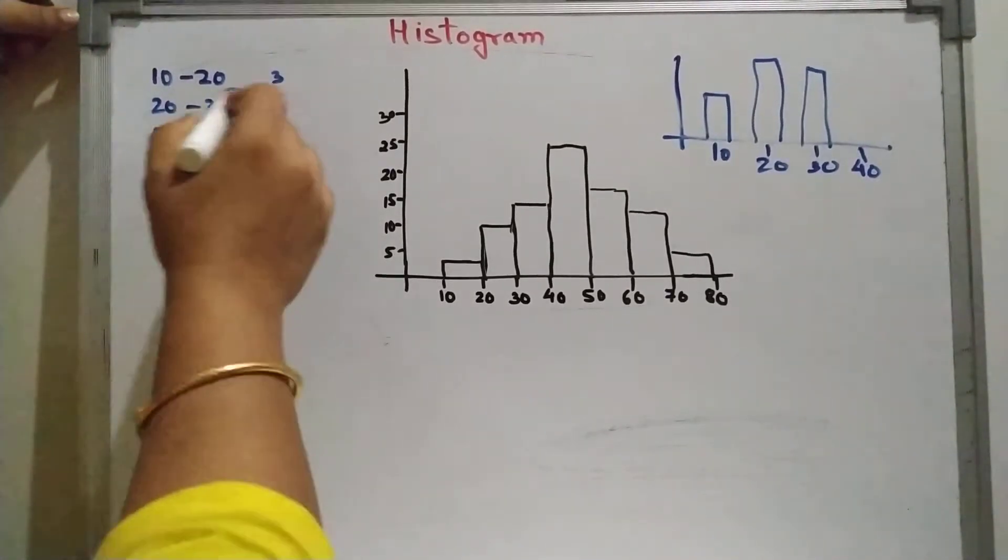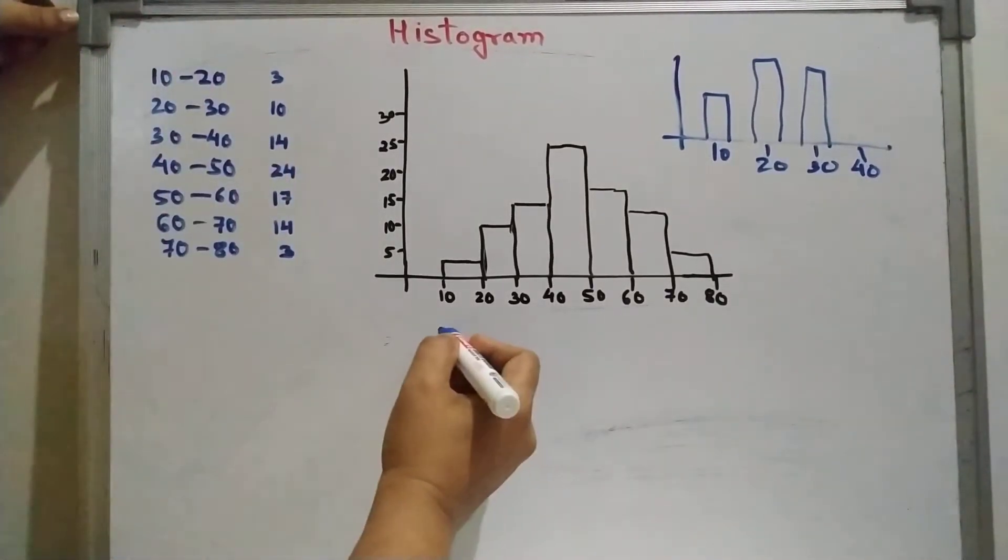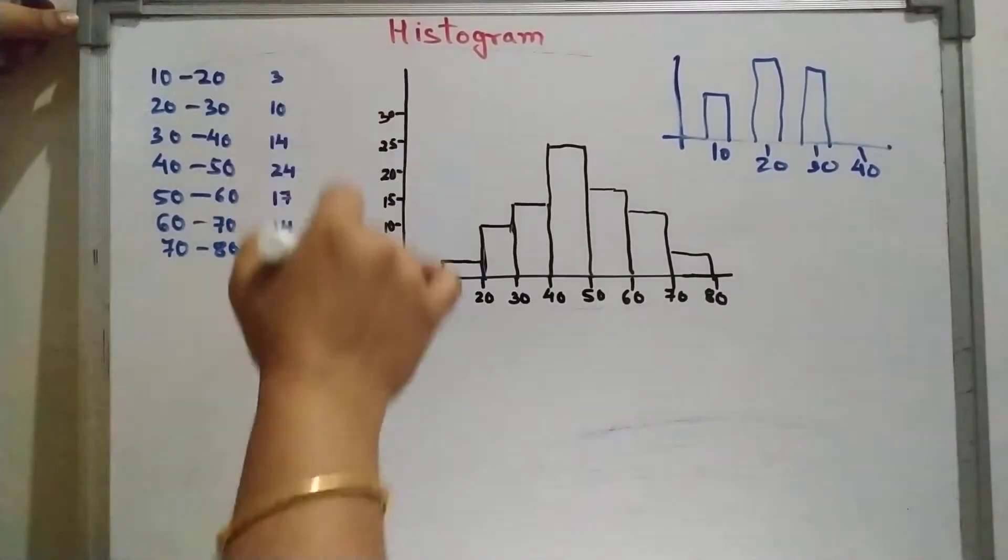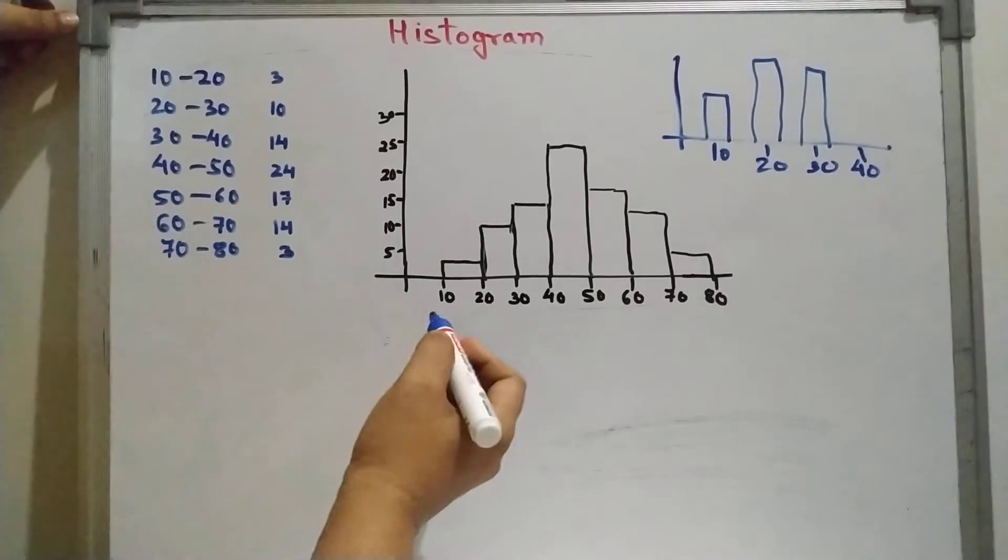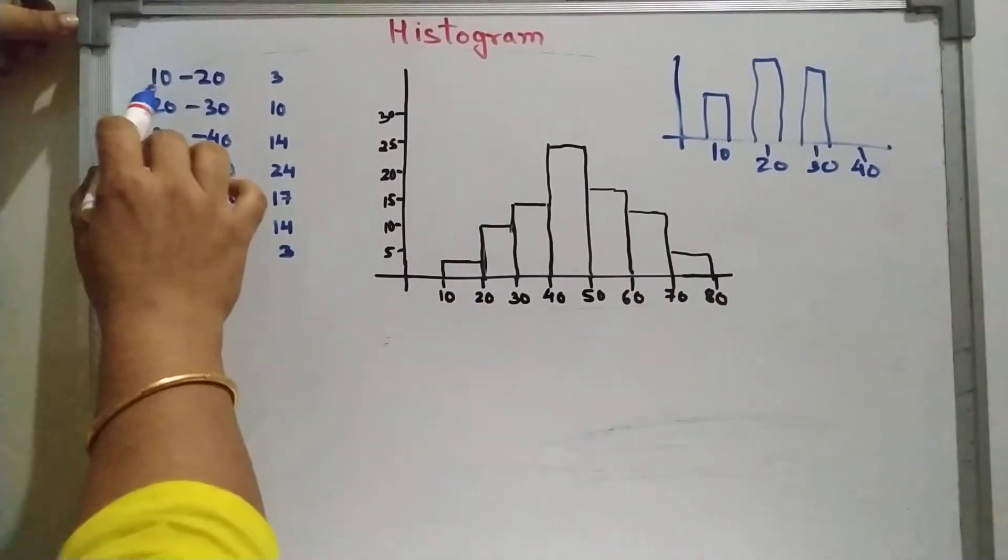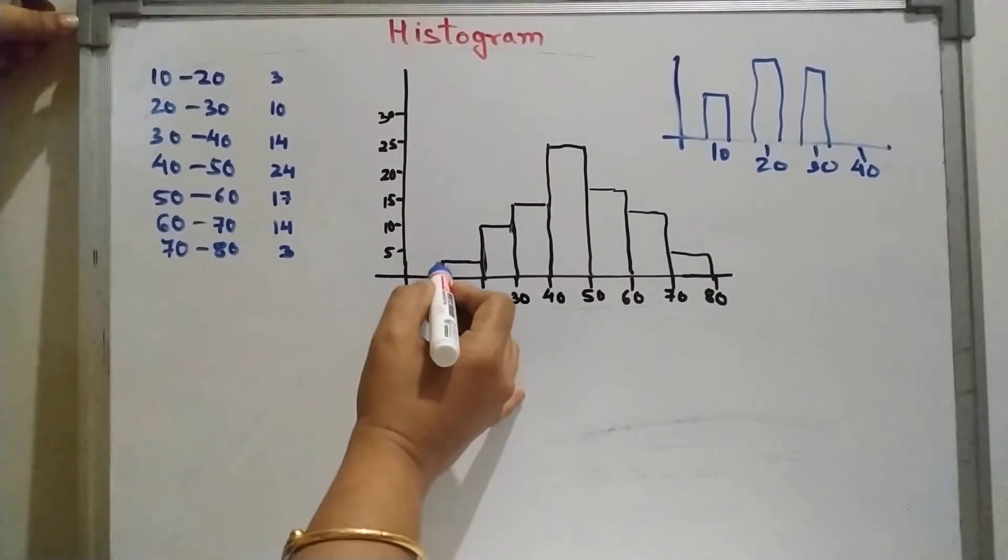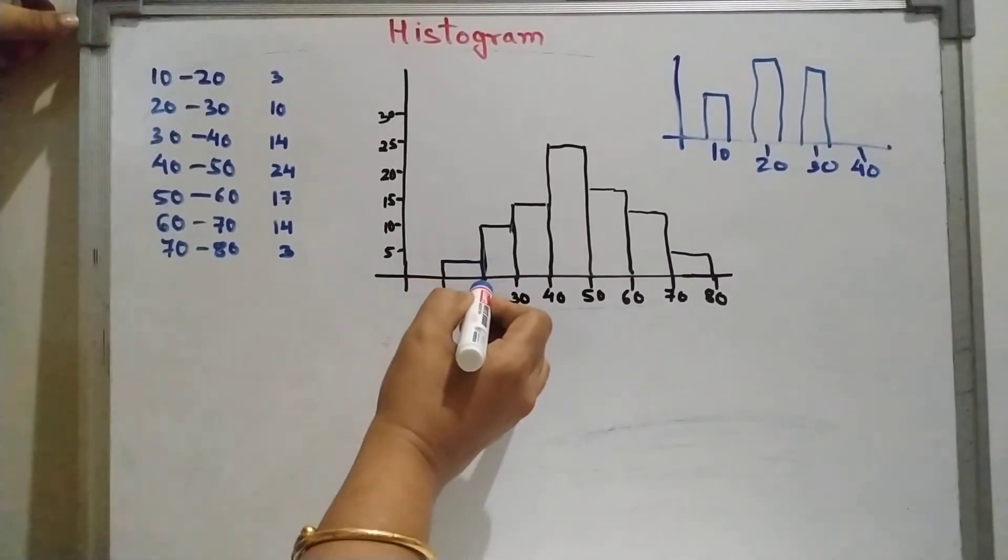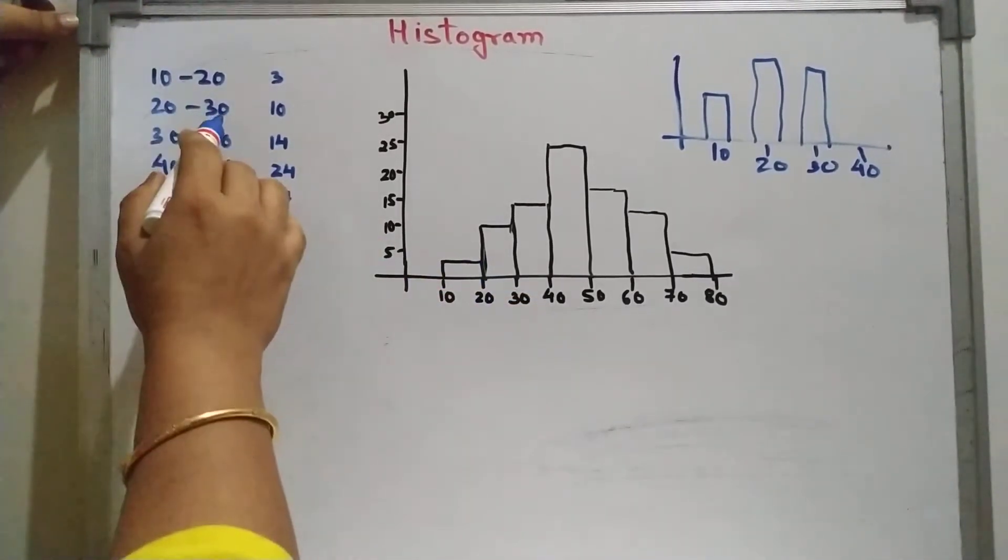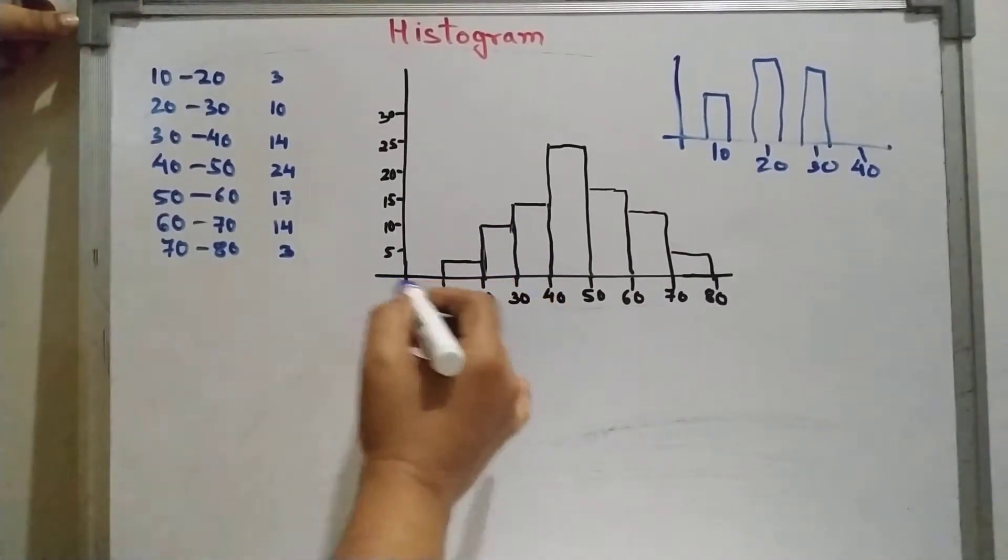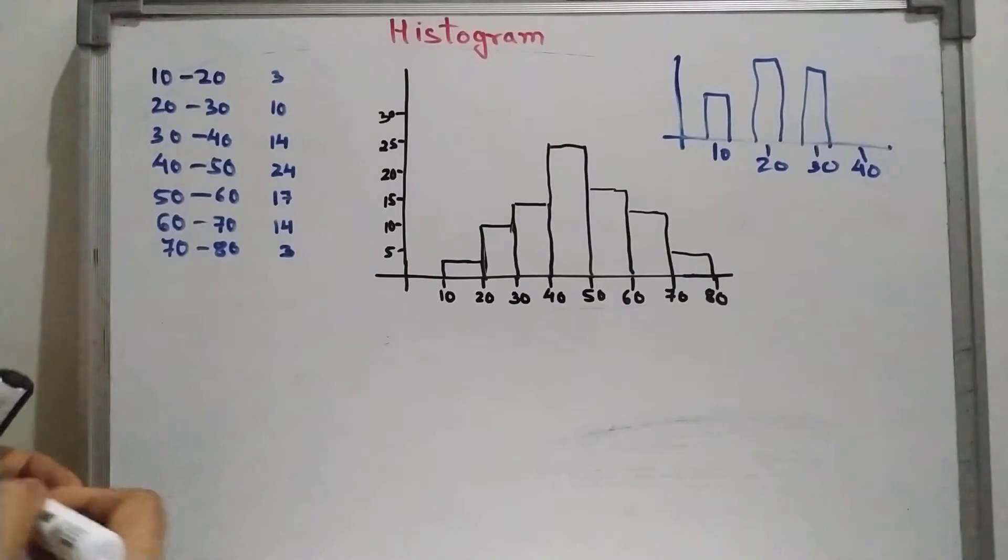We are plotting the class interval along the x-axis and the frequency along the y-axis. Look here, 10 to 20, the value is 3. So 10 to 20 we raise the bar up to 3. Then from 20 to 30 it is 10. So 20 to 30 it is 10 like this. We plot the histogram.